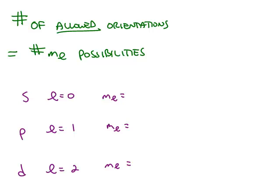Once you know the shapes of the orbitals, the next question has to do with the orientation of those orbitals. The number of allowed orientations is equal to the number of m sub l possibilities. For example, an s orbital has the quantum number l equal to zero, and the only value of m sub l possible when l is zero is zero. So that means s orbitals have one allowed orientation.